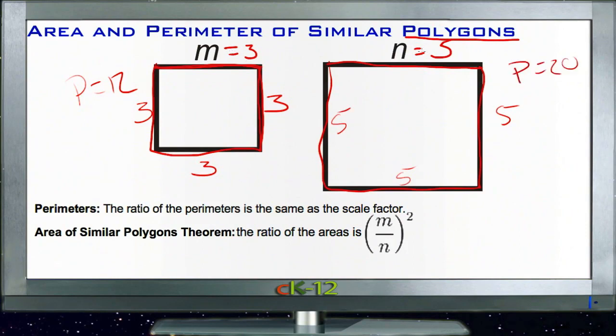And whereas their direct scale is three to five, if their perimeters are 12 to 20, you'll see that this fraction, 12/20, would reduce to 3/5, because that's the same ratio.